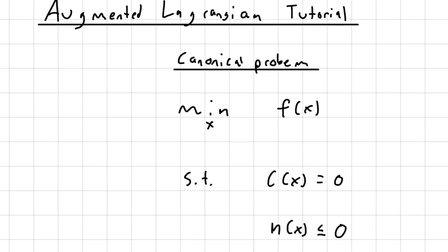I'm going to go over some augmented Lagrangian stuff specific to the QP solver that you'll be making in question three of the homework. I want to go over some of the more specific details and how this thing works in general. First, let's look at a canonical problem — we'll assume this is convex for the time being.